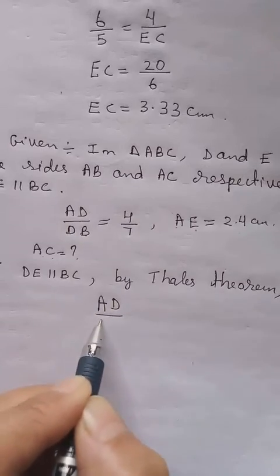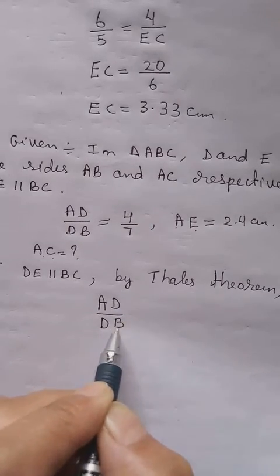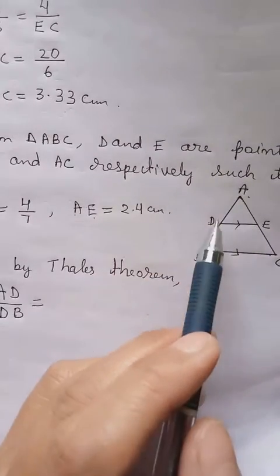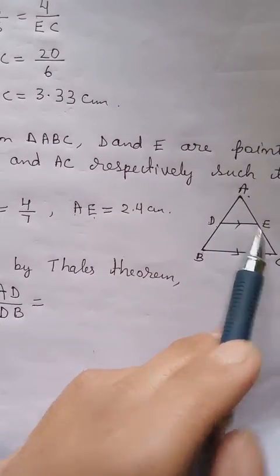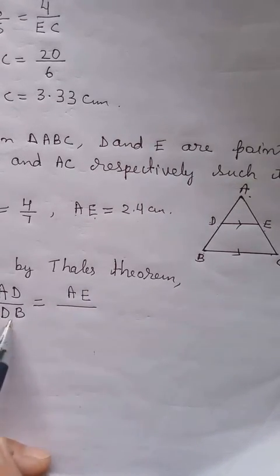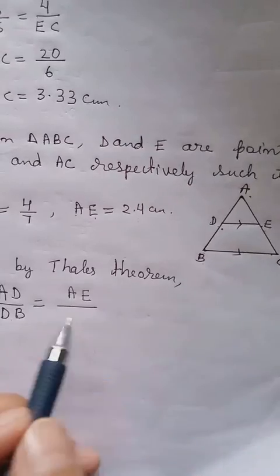We have AD by DB. So compare from the figure, what is the corresponding ratio? We have AD by DB, so that means we can take AE. Then we have DB, DB we can take EC.